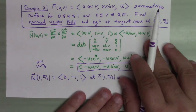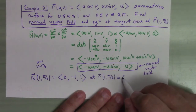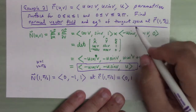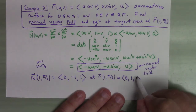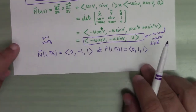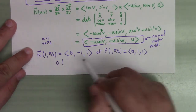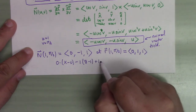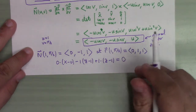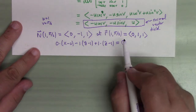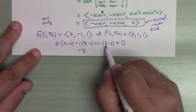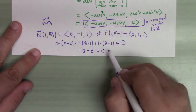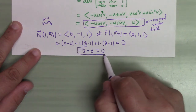Plugging in u=1, v=π/2: cos(π/2)=0 gives x-component 0; sin(π/2)=1 gives y-component -1; z-component is u=1. So the normal vector is (0,-1,1). The point on the surface is r(1, π/2) = (1·cos(π/2), 1·sin(π/2), 1) = (0, 1, 1). The tangent plane equation is: 0·(x-0) - 1·(y-1) + 1·(z-1) = 0, which simplifies to z = y.